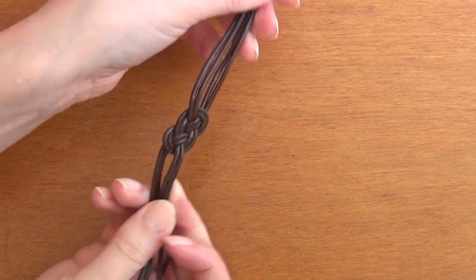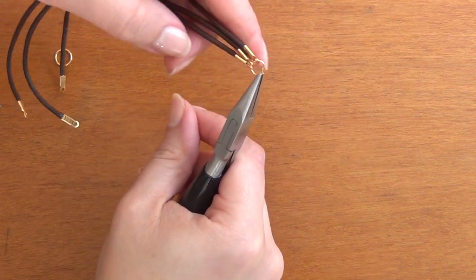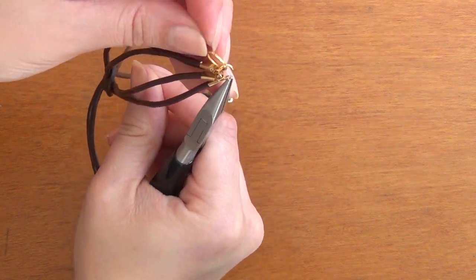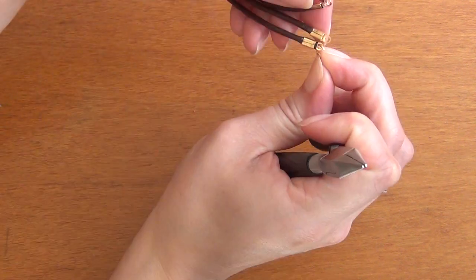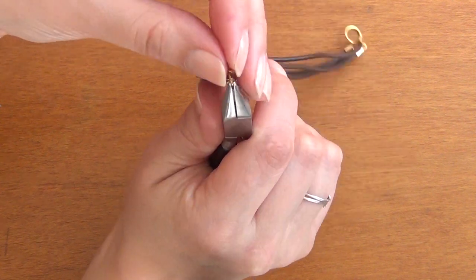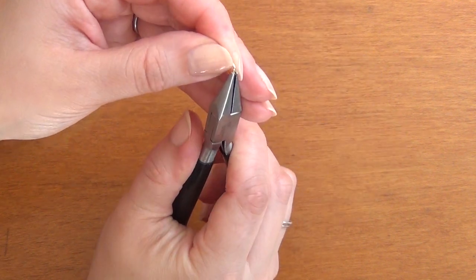Once that's done, you attach them all to the same jump ring and attach that jump ring to another closed jump ring—that gives you something to close the bracelet with. Then open up another jump ring to attach your lobster clasp, and that is your finished bracelet.